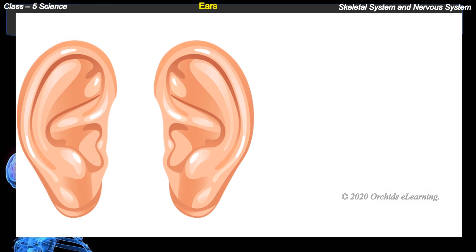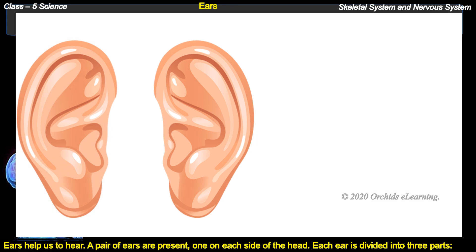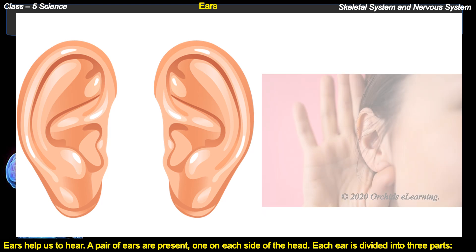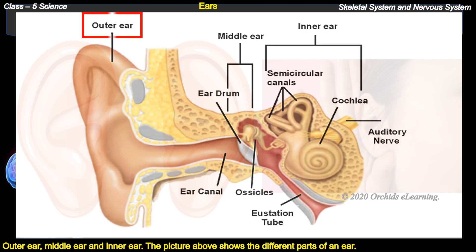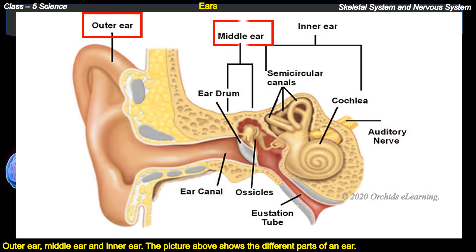Ears help us to hear. A pair of ears are present, one on each side of the head. Each ear is divided into three parts: the outer ear, the middle ear, and the inner ear.